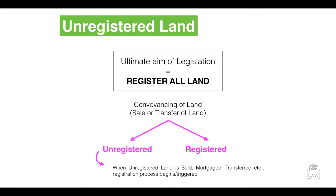Due to this fact, the ultimate aim has always been to register unregistered land. Therefore, when there is a conveyance, a sale, or a transfer of land, this process of registration automatically takes place. For instance, when the land is sold, mortgaged, or transferred, the registration process is triggered.